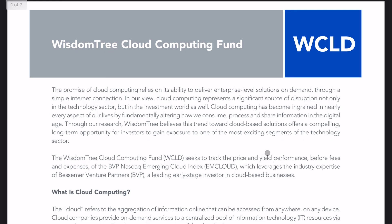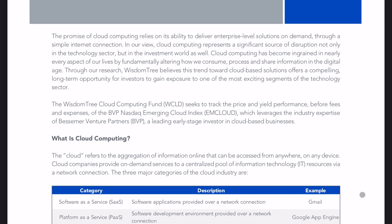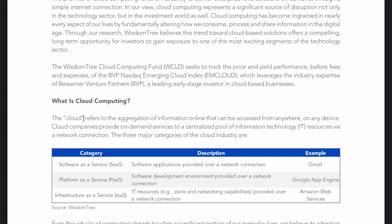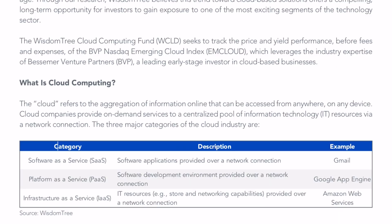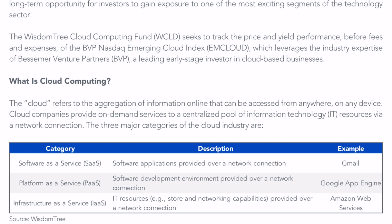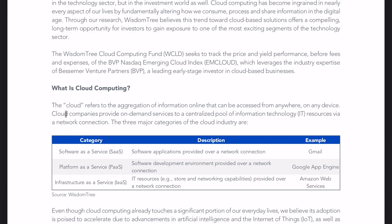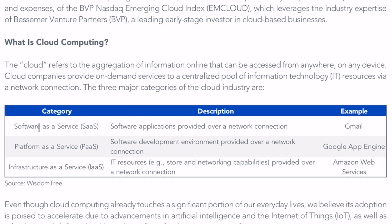WCLD is a bit more interesting because it's more specialized. Similar to IGV, just more concentrated. The cloud refers to the aggregation of information online that can be accessed from anywhere on any device. Cloud companies provide on-demand service to a centralized pool of IT resources via a network connection. The three major categories of the cloud industry are Software as a Service, Platform as a Service, and Infrastructure as a Service.